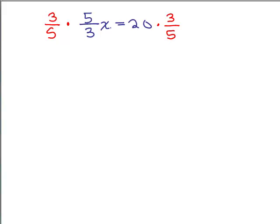So that way, the 5s and the 3s cancel and we'll get x equals, and let's see what we can cancel over on this side. The 5 goes into the 20 four times. Now remember, you could write 20 over 1 if that's easier for you. And so I get 4 times 3, so my answer is 12.